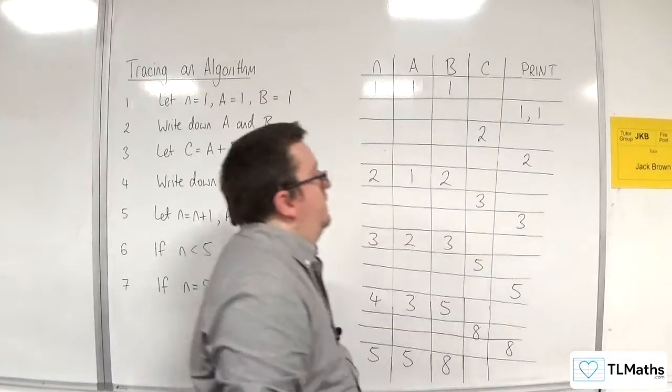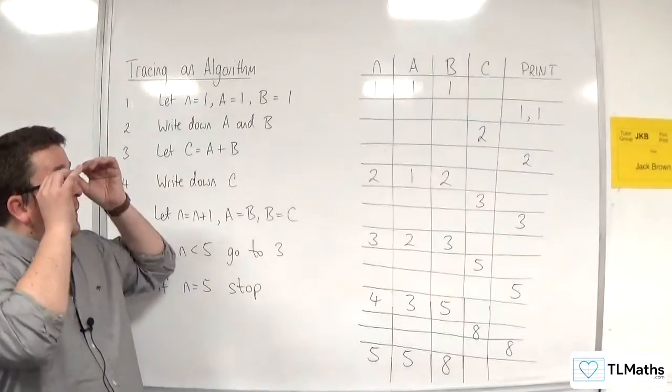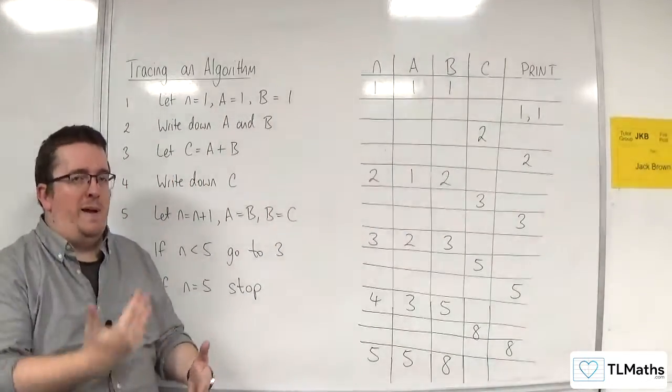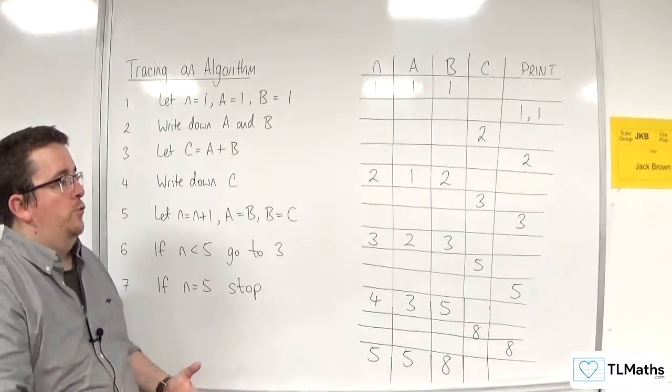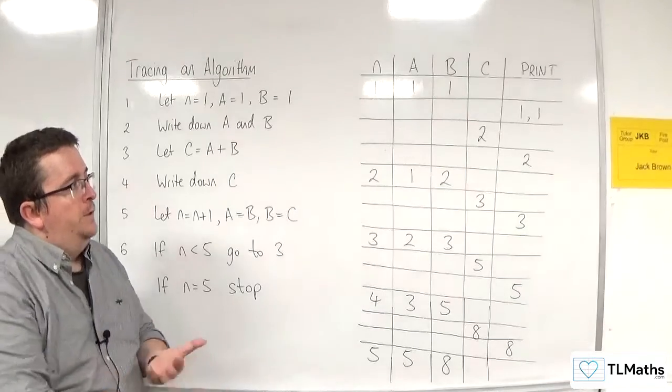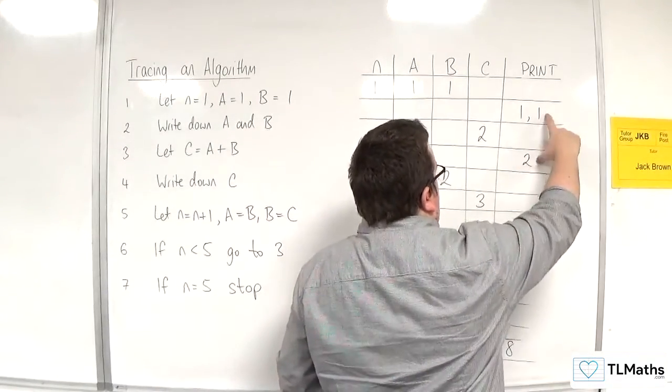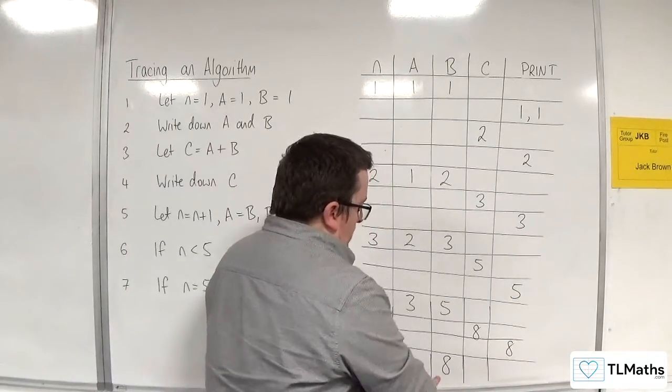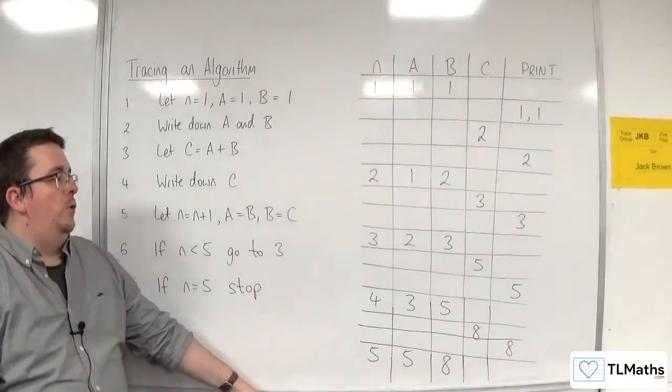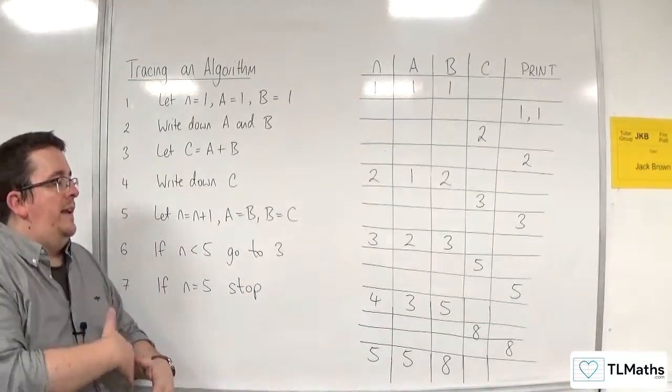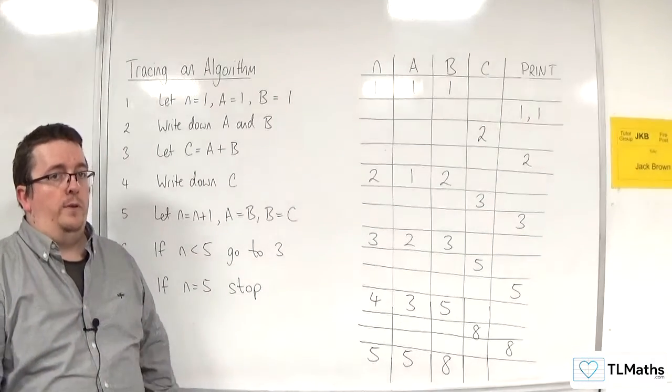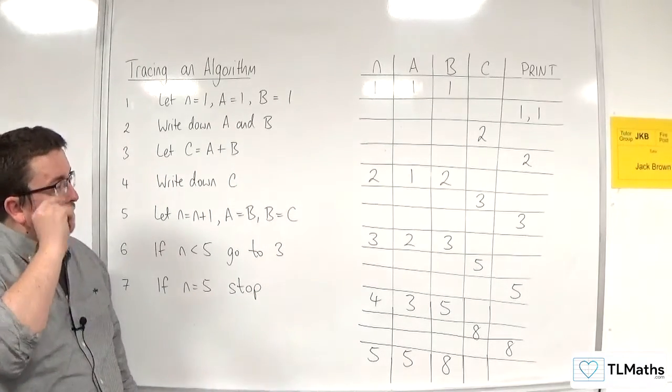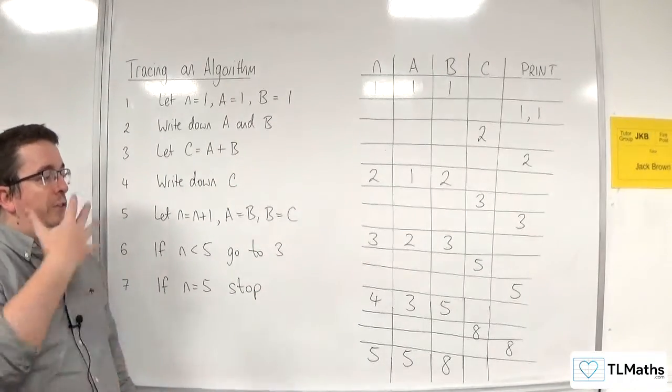Now, looking at it, can we determine what it's actually done? When you're doing this, consider the print column. What has your algorithm outputted? So we have one, one, two, three, five, eight. Now, you might be spotting one plus one is two. One plus two is three. Two plus three is five. Three plus five is eight. The next one would have been five plus eight is 13. So what this is doing is it is outputting the first few terms of Fibonacci's sequence. So that is what the algorithm does. This is our first tracing, the algorithm. So you can see how this works.